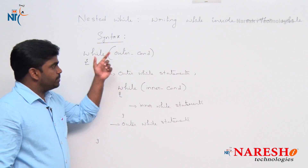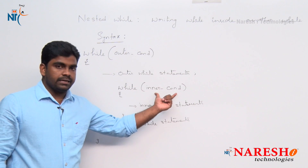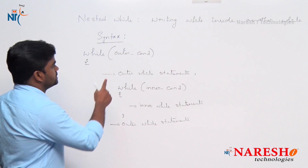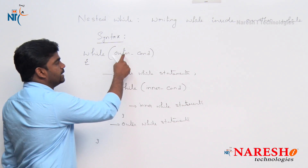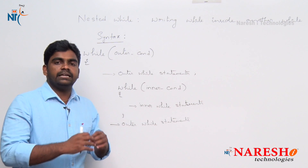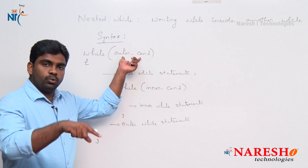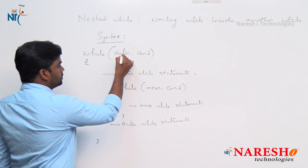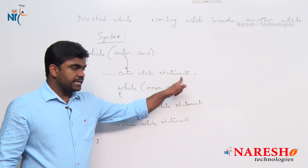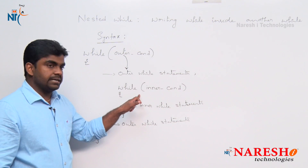Outer while loop executes based on outer condition; inner while loop executes based on inner condition. How it executes: first it will check outer condition. Suppose if outer condition has failed then it will terminate. Suppose if outer condition is true, the control moves inside — it will execute outer while loop statements first, and next it will check the inner condition.